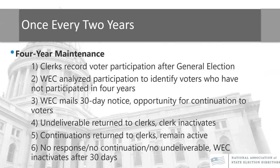For our four-year maintenance — one of our main state-level responsibilities — it actually happens every two years. Every election, clerks record participation. Every two years, we look at all participation statewide and determine who hasn't voted in four years. We send them a notice saying, 'You haven't voted in four years. Do you want to stay registered at this address? If we don't hear from you, you're going to be inactivated.' If those postcards are undeliverable or we don't hear from someone, those records are deactivated to inactive status. If somebody does return a continuation card, they stay on active status.